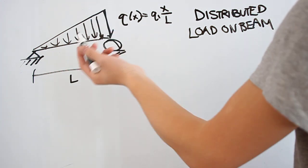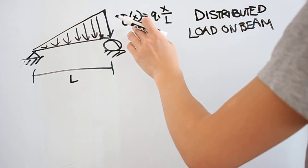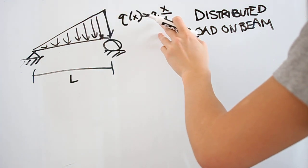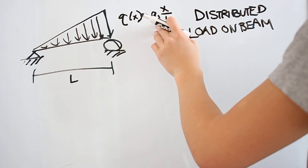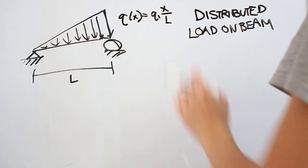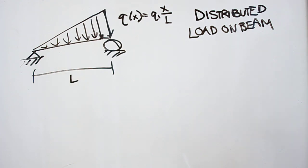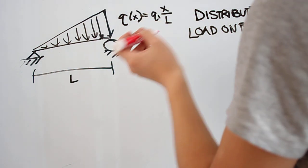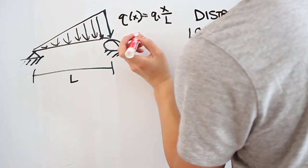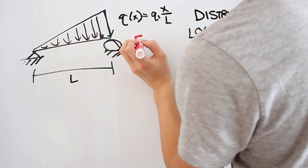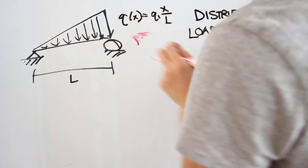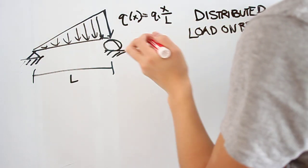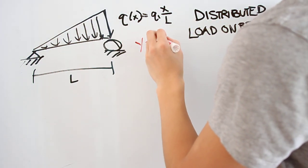For this purpose, just know that to describe this force — this distributed load — you have q(x), where q is the distributed load function, equal to a given value q1 over L times x. To understand why it looks like a triangle, think about a graph and a function like y equals mx.